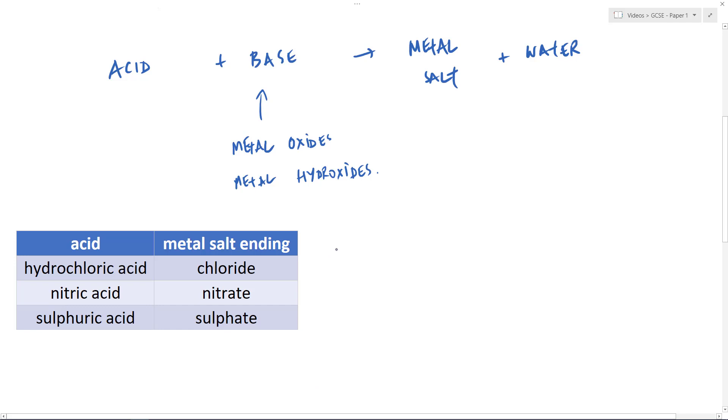So an example, if I were to take hydrochloric acid and I reacted that with sodium hydroxide, what I'd produce is a metal salt where the metal from either the metal oxide or the metal hydroxide is the metal of the metal salt. So in this case I'd have sodium and my ending of my salt is dictated by the acid that's used. So in this case hydrochloric acid would produce a chloride.